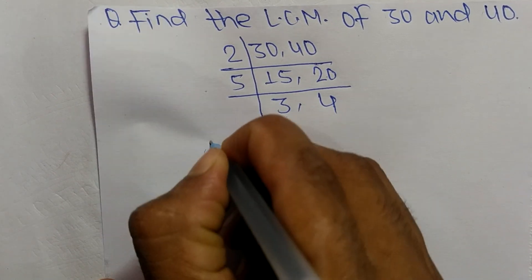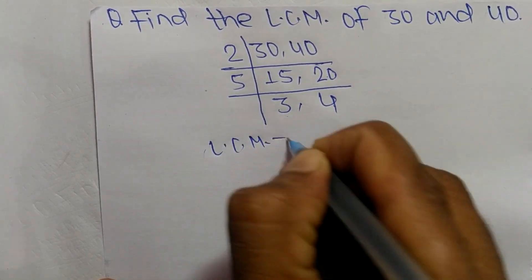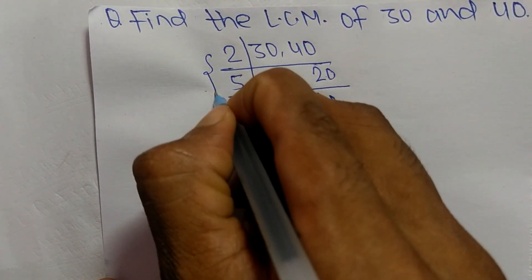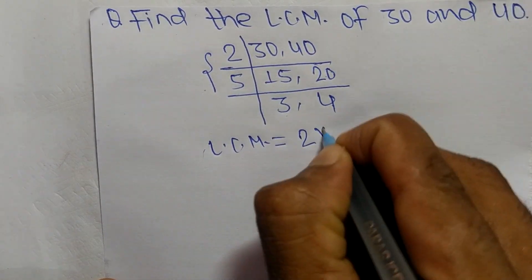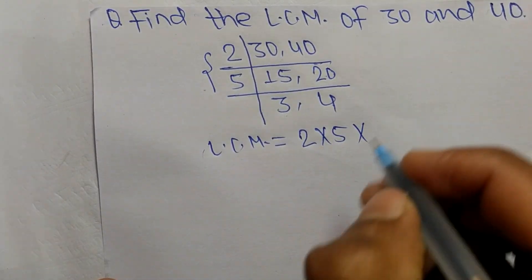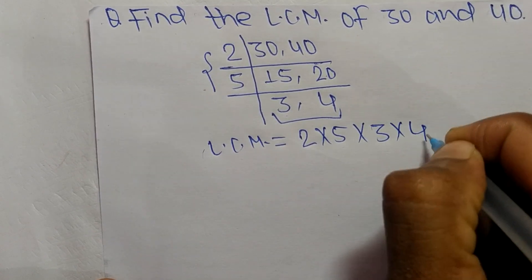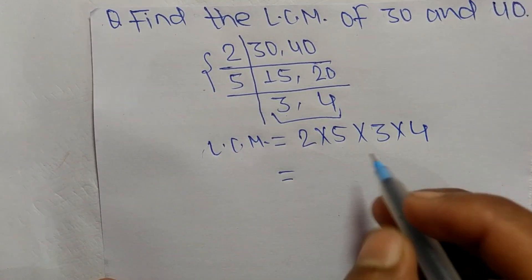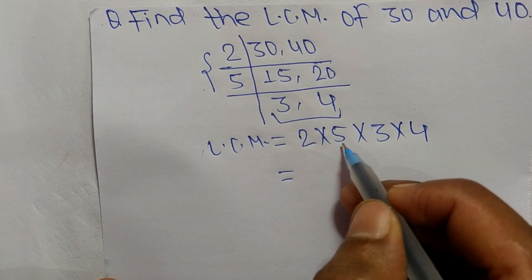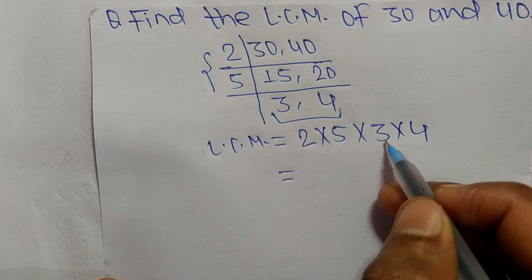So its LCM is equal to, from this part it is 2 times 5, and from this part it is 3 times 4. So it is equal to 2 times 5 means 10, 10 times 3 means 30, 30 times 4 means it is 120.